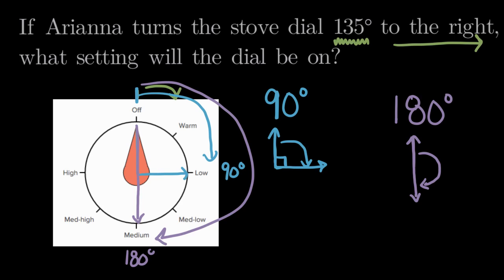So where does 135 fall? Well, 135 falls somewhere in between 90 and 180. 90 was not far enough of a turn, and 180 was too far of a turn, so we want something in the middle.